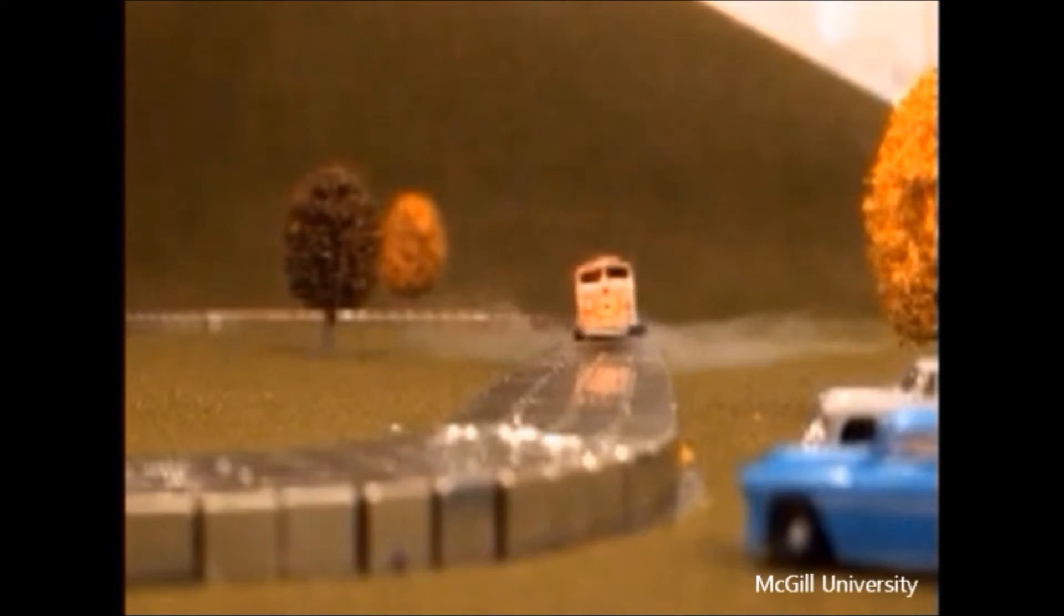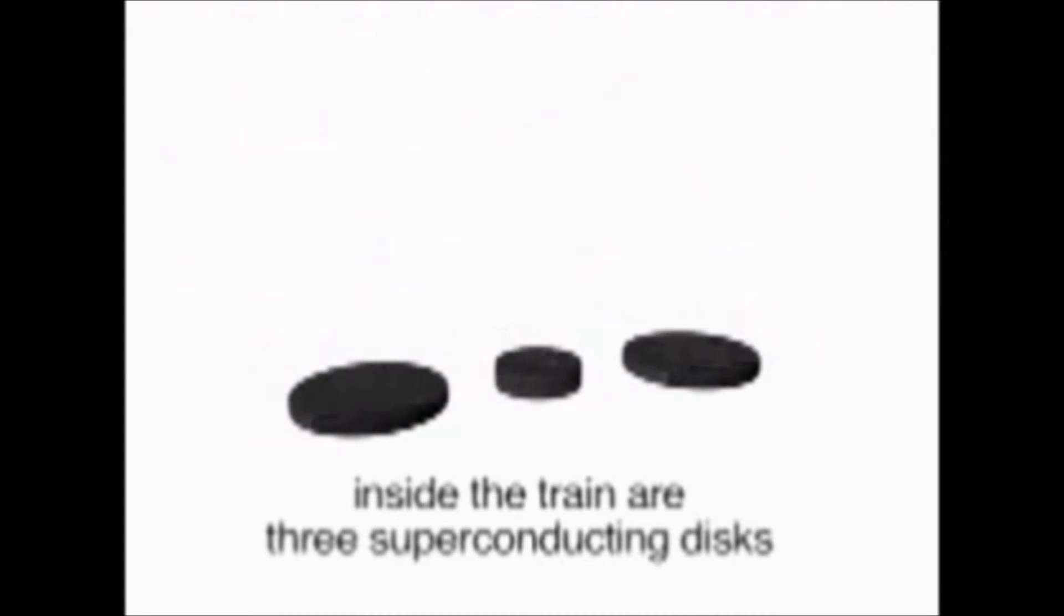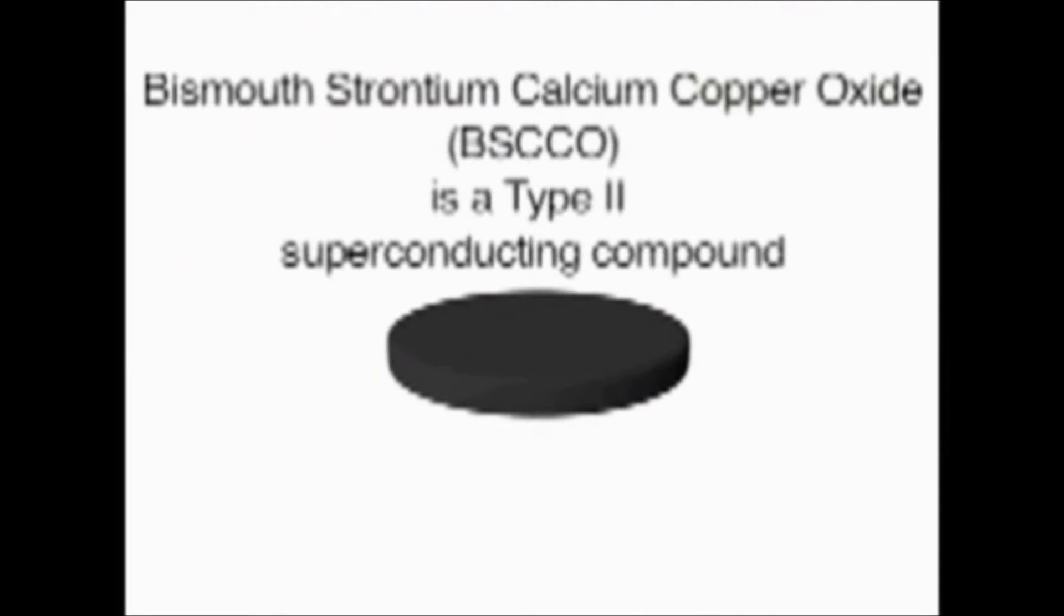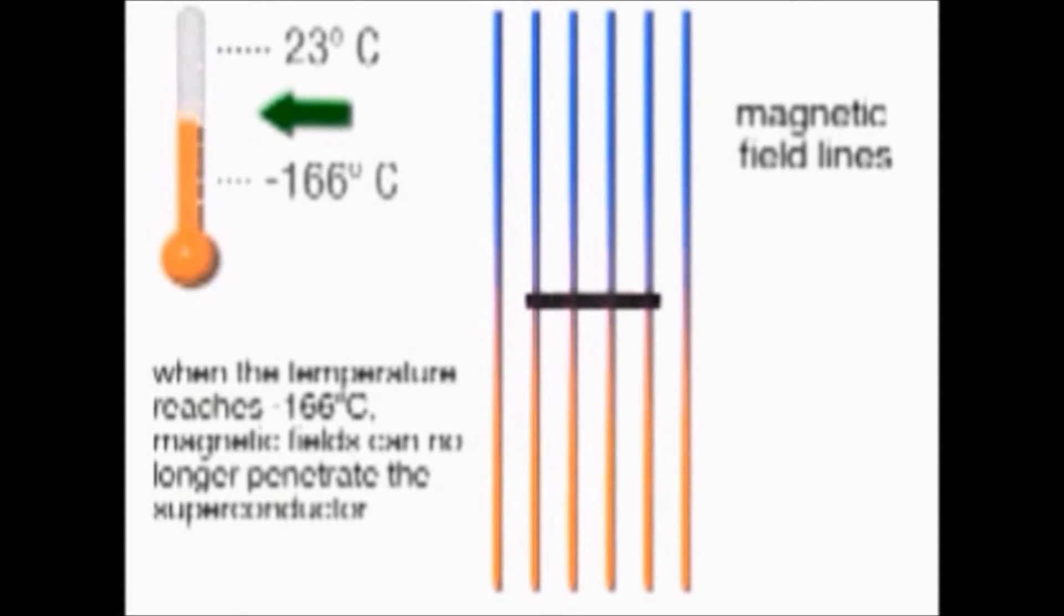The Meissner effect works by supercooling a superconductor, and in doing so, allowing the superconducting material to block magnetic fields. So when it is placed into a magnetic track, it moves in a tunnel, a sort of tunnel created by this effect. This is how large-scale maglevs actually levitate.